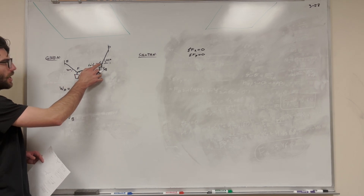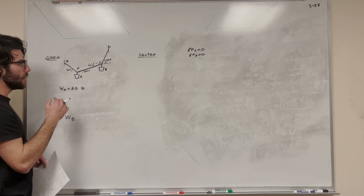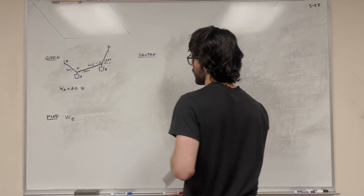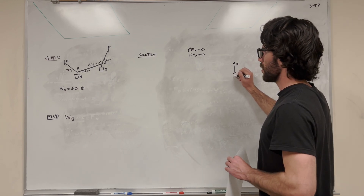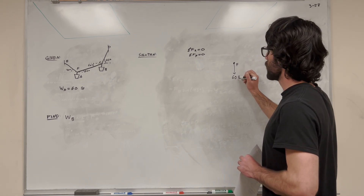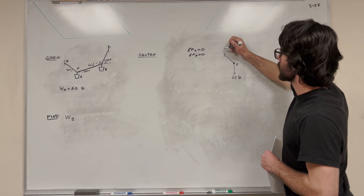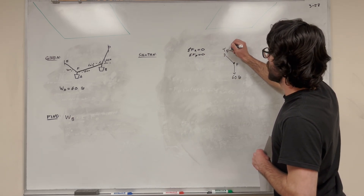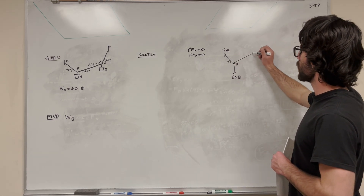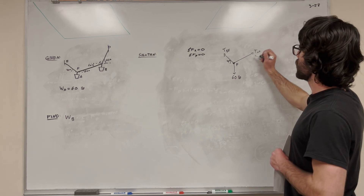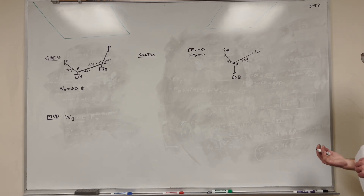The tension I want to find is CF — this tension here — because it starts where we already know something: the weight of A. So we're going to start by finding the tension in CF. Let's draw a free body diagram at F. Here's F. We have the weight of bucket A pulling down, which is 60 pounds. We have tension EF at a 40-degree angle, and then tension CF pulling at a 20-degree angle.